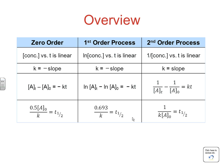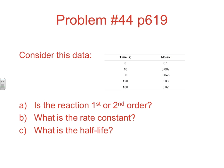Now let's work through problem 44 from the book on page 619. They give you time versus moles data — notice it's moles, not concentration, but moles, pressure, and concentration are all interchangeable when working these graphs. Part A: is this first order or second order? Part B: what is the rate constant? And Part C: what is the half-life for this reaction?